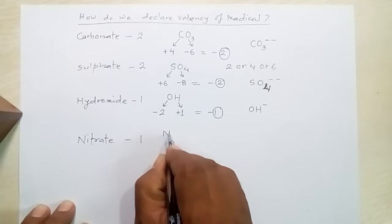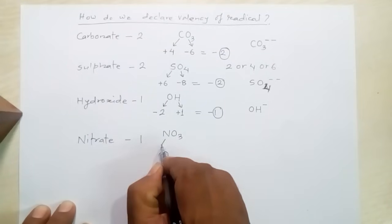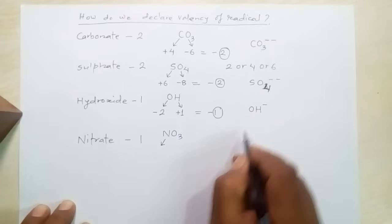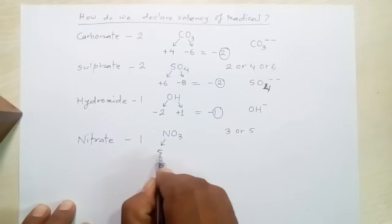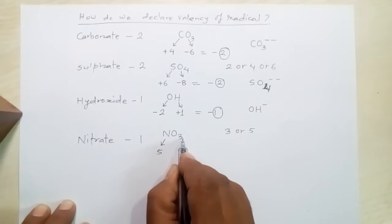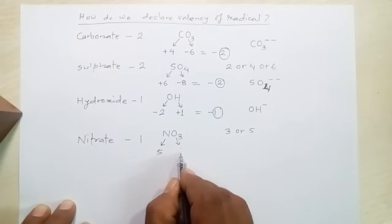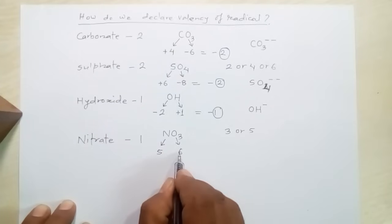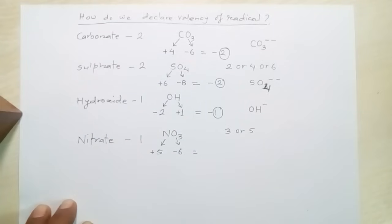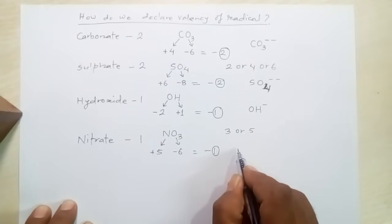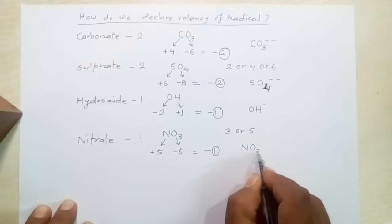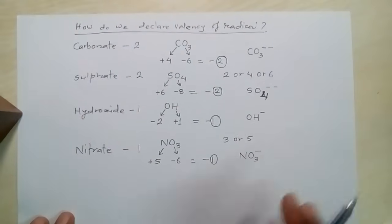In the same way, nitrate's formula is NO₃. Nitrogen's valency at this time is 5, and oxygen's valency is 2 with 3 atoms of oxygen, giving a total of 6. Nitrogen is electropositive and oxygen is electronegative, so +5 −6 = −1. The valency of nitrate is 1, the negative sign indicates it is an electronegative radical, and its ion is represented as NO₃⁻. This is how we can declare the valency of different radicals.